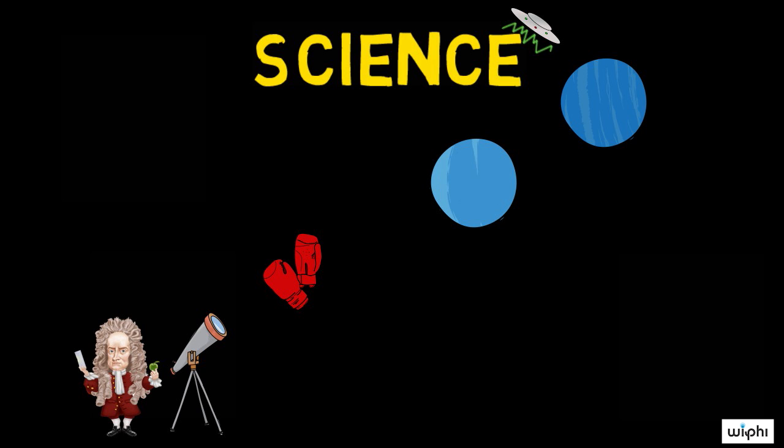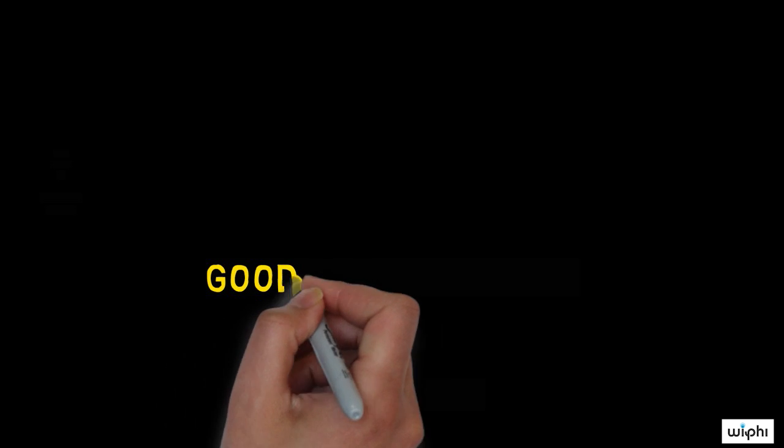And it turned out that this was correct. There was another planet, which we know is Neptune today. So what makes something a good explanation?